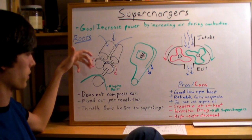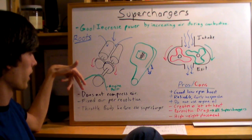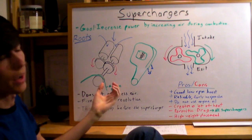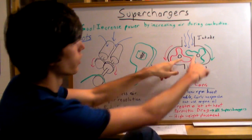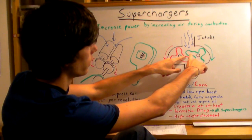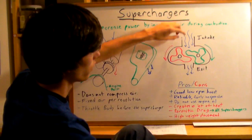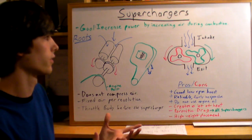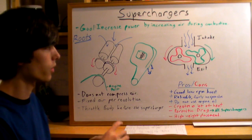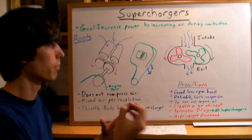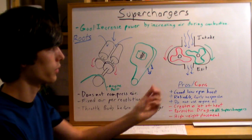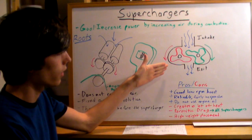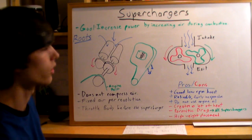Another thing to note with roots superchargers or blower type superchargers is there's a fixed amount of air that enters per revolution. With one revolution of these, you're going to have a fixed amount of air that goes in. That's a little different from a turbocharger which will spool up and then pull in air but it's not fixed per revolution. What that means here is that at low RPMs you can get a good amount of power.